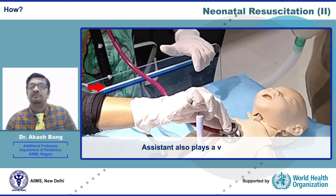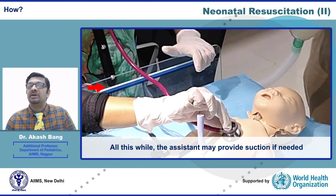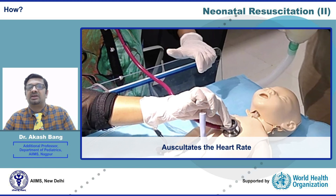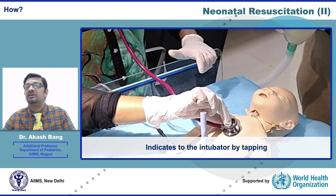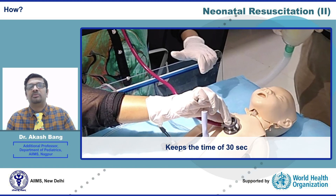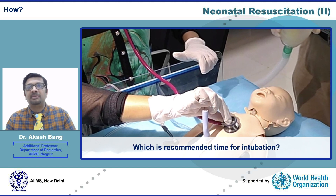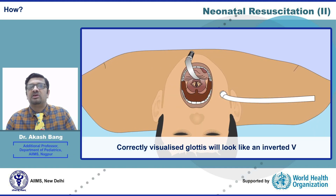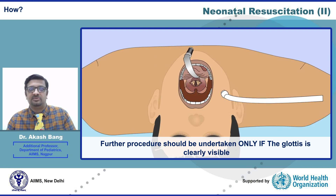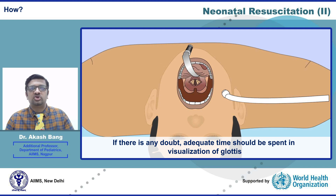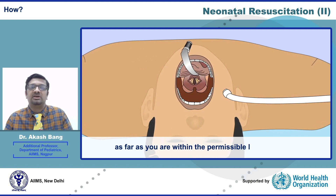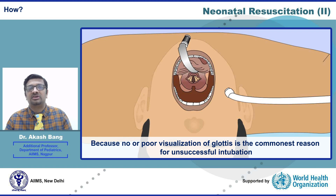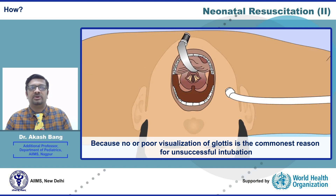The assistant plays a very crucial role throughout the procedure. The assistant may provide suction if needed, should auscultate the heart rate, and indicate to the intubator by tapping if the heart rate starts going down. The assistant should also keep time — 30 seconds is the recommended limit for intubation. A correctly visualized glottis will look something like an inverted V. Further procedure should be undertaken only if the glottis is clearly visible. Poor visualization of the glottis is the commonest reason for unsuccessful intubation.